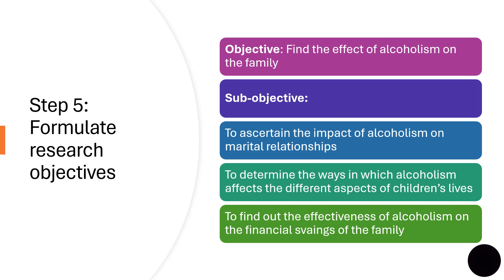Step five: start formulating the objectives. Both your main objectives and sub-objectives now need to be formulated based on your research questions. The main difference between objectives and research questions is the way in which they are written. Research questions are obviously questions, and objectives transform those questions into behavioral aims by using action-oriented phrases such as 'to find out,' 'to determine,' 'to ascertain,' or 'to examine.' Some researchers prefer to reverse the process — starting from objectives and formulating research questions from them. Some are satisfied with only research questions and do not formulate objectives at all. For example, in step five you may have the main objective as 'to find out the effects of alcoholism on the family,' with sub-objectives to ascertain the impact on marital relationships, to determine how alcoholism affects different aspects of children's lives, or to find out the effects on the family's financial situation.